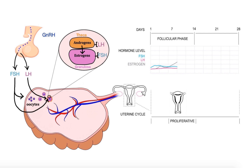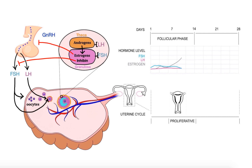Secondly, the initial rise in estrogen levels sends a negative feedback signal to the hypothalamic-pituitary axis to suppress further production of FSH and LH. In addition, granulosa cells of the growing follicles produce another hormone called inhibin, which selectively suppresses FSH secretion. As the follicular phase progresses, out of the multiple large follicles that remain sensitive to decreasing levels of FSH, only a single dominant follicle continues to grow and produce increasing amounts of estrogen.